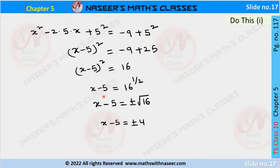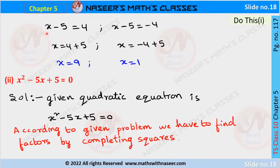So (x - 5)² = 16. To find x, we write x - 5 = 16^(1/2), which is the square root. This can be written as x - 5 = ±√16. Since 16 = 4², this becomes x - 5 = ±4.